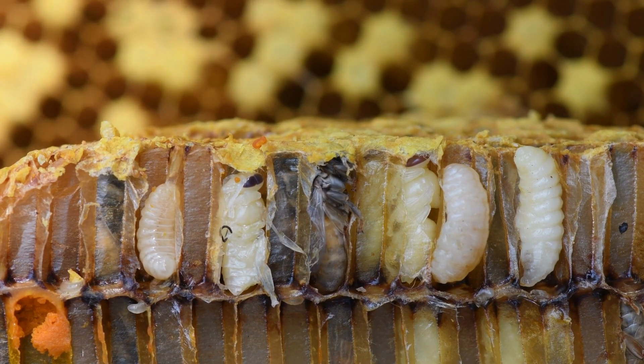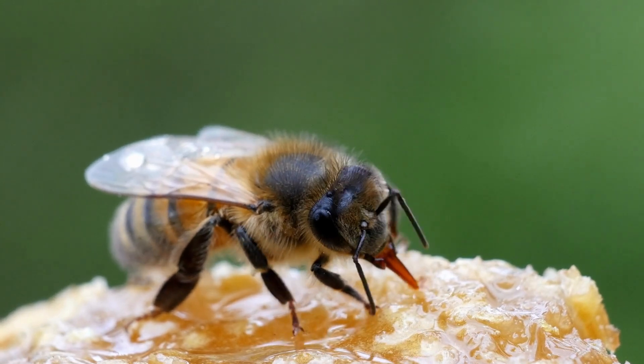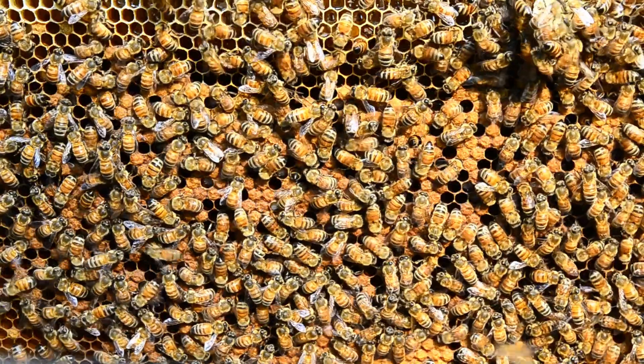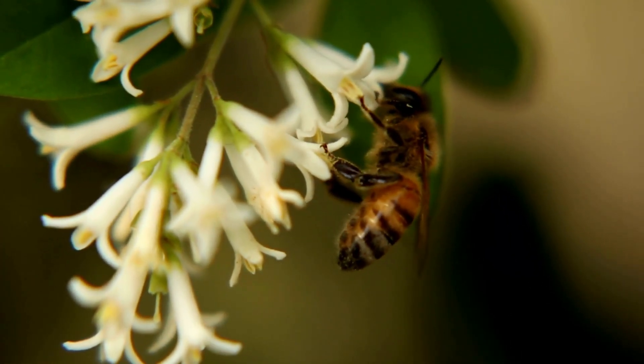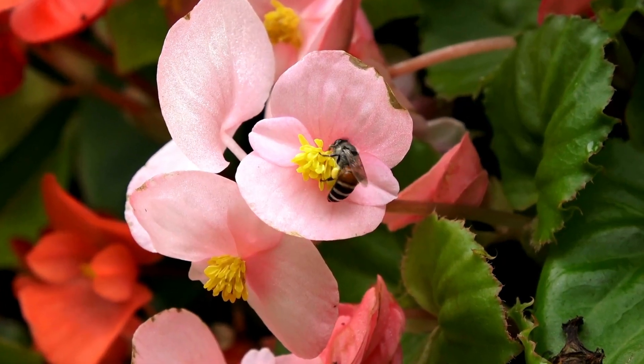Finally, after some time, the pupa breaks out of its cocoon and emerges as an adult honeybee. Honeybees are amazing creatures that work together to keep their hive strong and healthy. They help pollinate flowers and plants, which is essential for making fruits and vegetables grow.